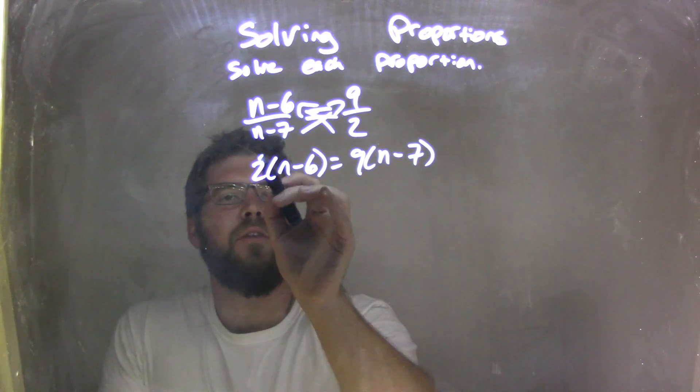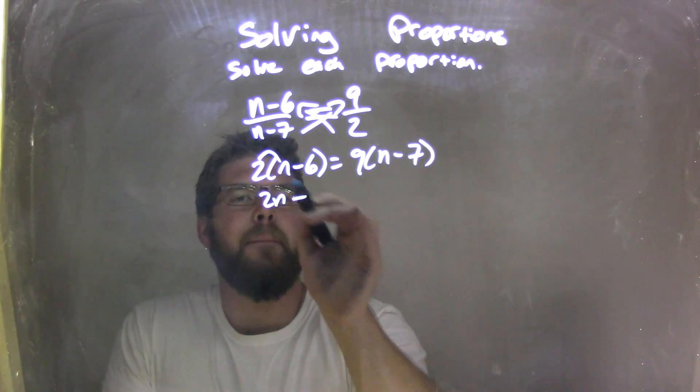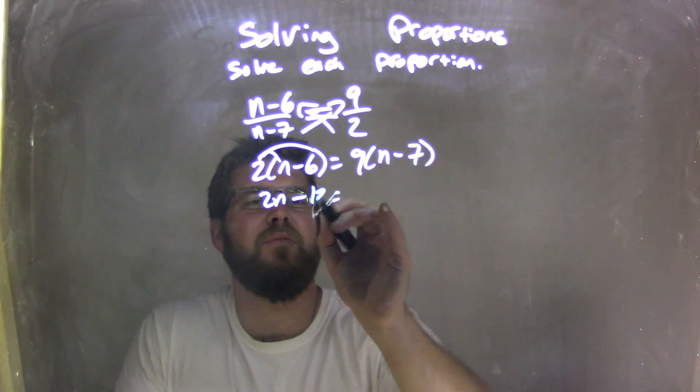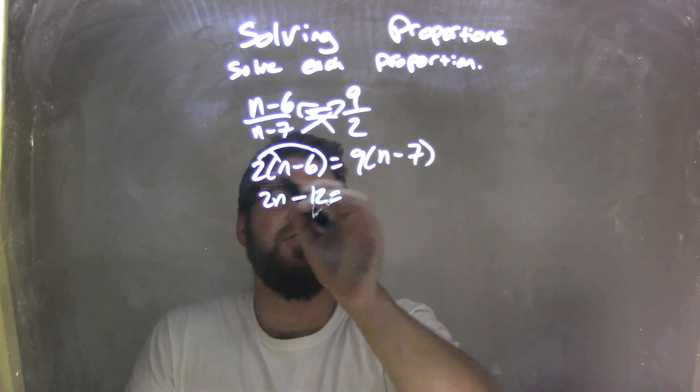So let's distribute the 2 across here. 2 times n is 2n minus 2 times 6, which is 12. Well, that's 16. What am I writing there? No, 2 times 6 is 12.